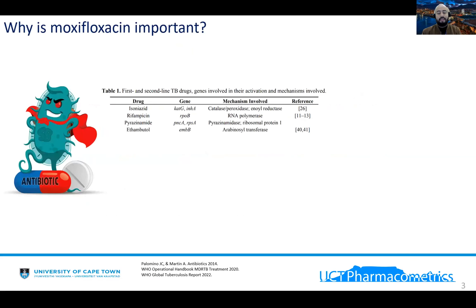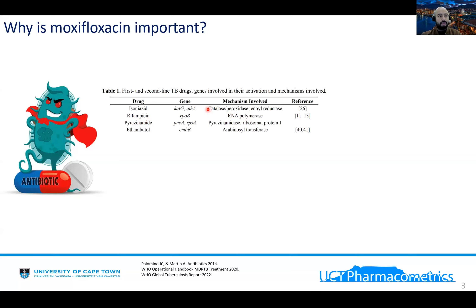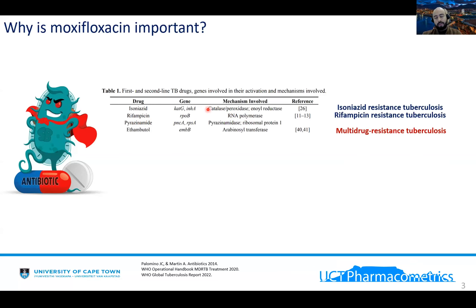I would like to start with information about moxifloxacin and tell you why it is important. Mycobacterium tuberculosis is the organism causing tuberculosis, and the first line of treatment is composed of these drugs seen here in this table: isoniazid, rifampicin, pyrazinamide, and ethambutol. Unfortunately, mycobacterium tuberculosis has been developing or acquiring resistance through different mechanisms. Two of the most important resistances described are rifampicin-resistant tuberculosis and isoniazid-resistant, which together compound the well-known multidrug-resistant tuberculosis, according to the WHO.